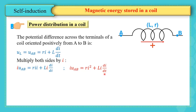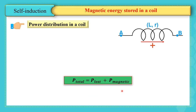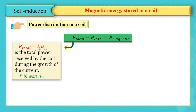So i × U_AB = P_total. This equation can be written as P_total = P_lost + P_magnetic, since power P = i × U.